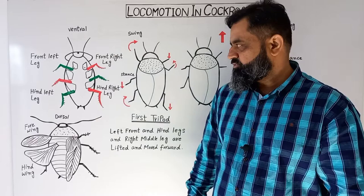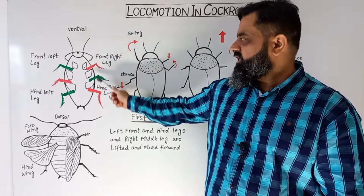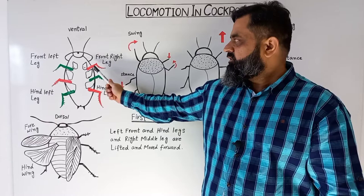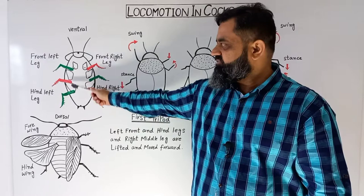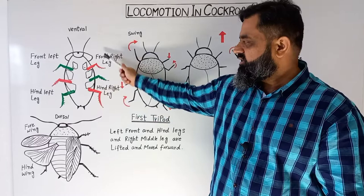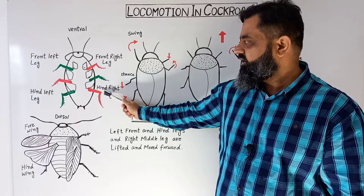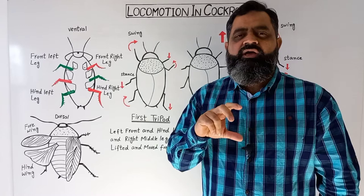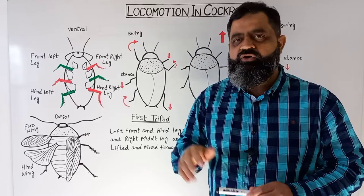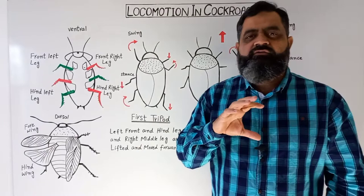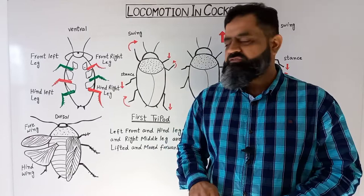I have made a diagram of the ventral portion of the cockroach — the ventral portion is towards the belly side. A cockroach has three pairs of legs located on the ventral side of the body: six legs total, three on the left side and three on the right side. On the left side there is the front leg, middle leg, and hind leg, and similarly on the right side. These legs are shown in different colors because they form tripods during locomotion. These six legs are used for walking and running.